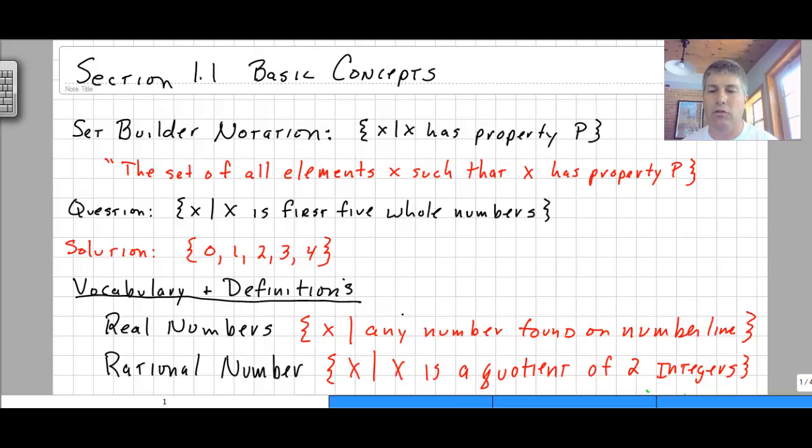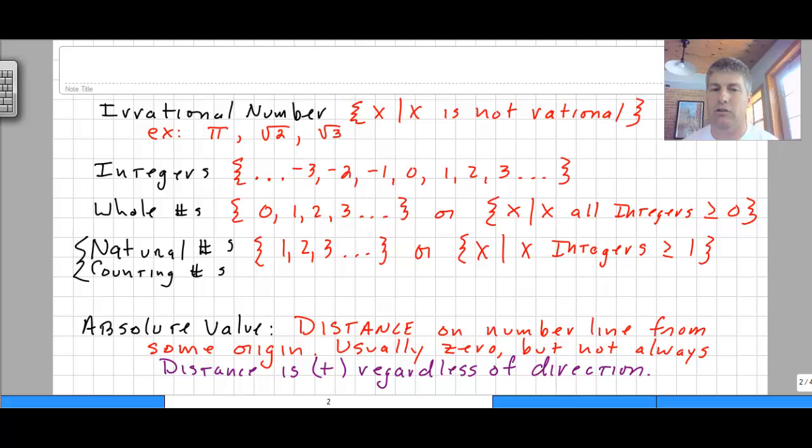Moving down to some vocabulary, pretty simple stuff, real numbers. Real numbers are X, the set of any numbers that can be found on the number line, whereas rational numbers are any numbers that are the quotient of two integers, and we'll define integers in here in just a moment.